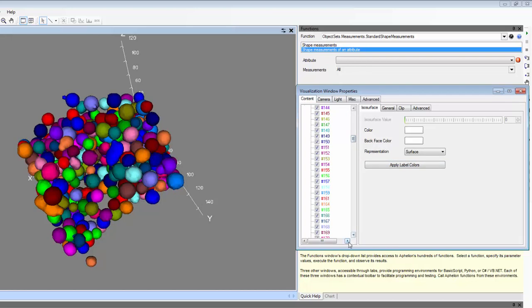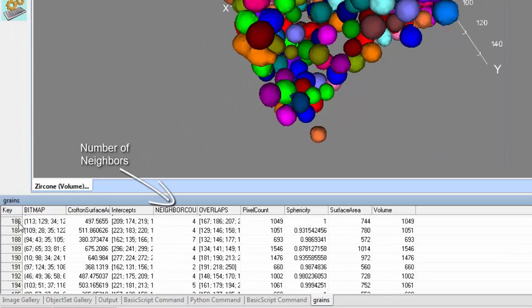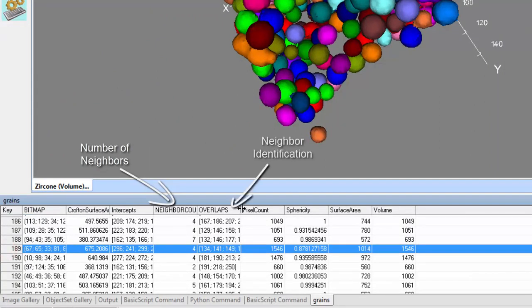Individual objects can be quickly identified simply by clicking on the object in the image. In this case, object 189 has been selected. In the table are the measured properties showing that this object has 4 neighbors.